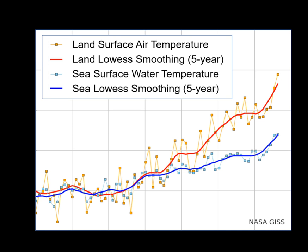SST changes diurnally, like the air above it, but to a lesser degree. There is less SST variation on breezy days than on calm days. In addition, ocean currents such as the Atlantic Multidecadal Oscillation can affect SSTs on multidecadal timescales. A major impact results from the global thermohaline circulation, which affects average SST significantly throughout most of the world's oceans. Ocean temperature is related to ocean heat content, an important topic in the debate over global warming.